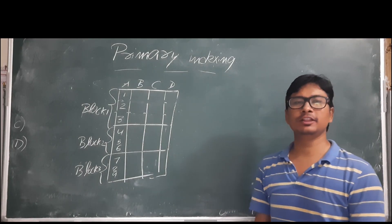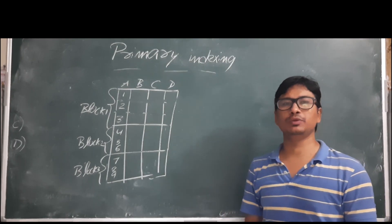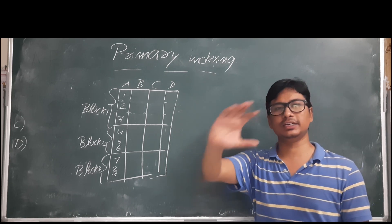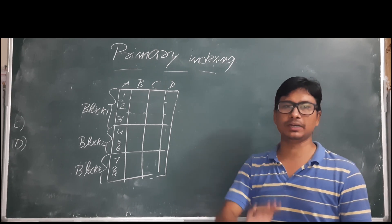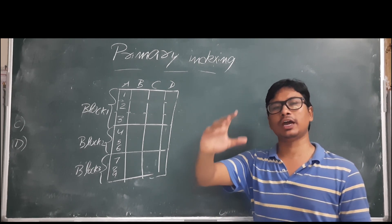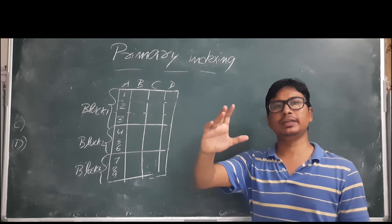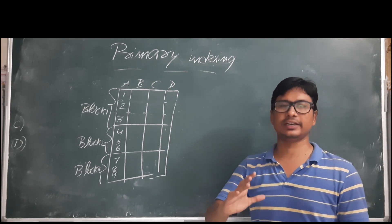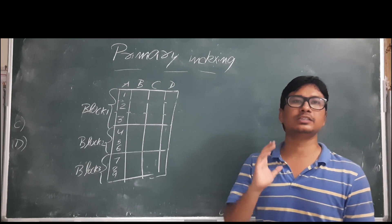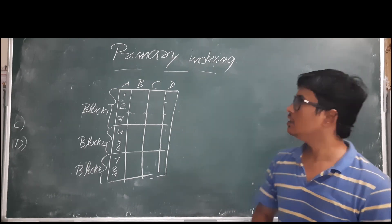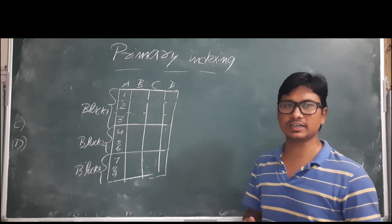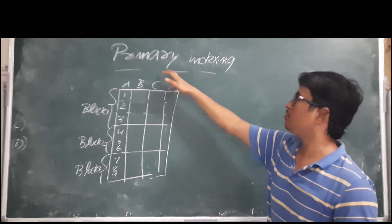Good morning students. In the previous video we discussed different types of indexings: single-level indexing and multi-level indexing. In single-level indexing we have primary indexing, secondary indexing, and clustering indexing. In multi-level indexing we have B-trees and B+ trees. Now we will discuss all the single-level indexing types, starting with primary indexing.